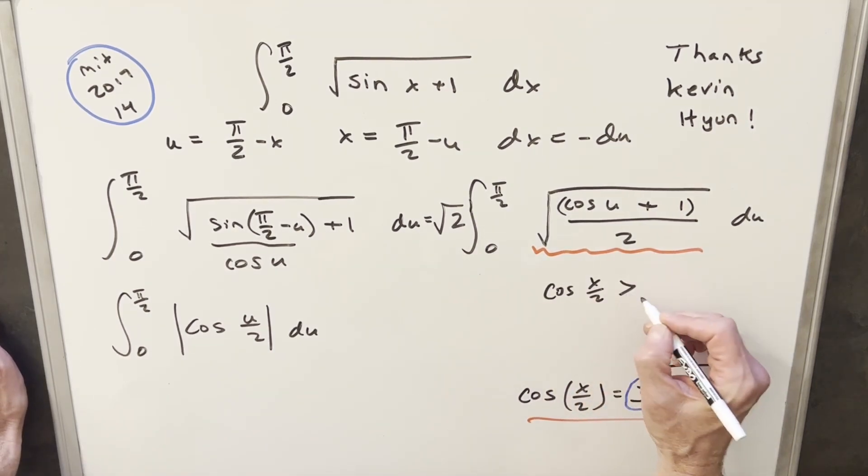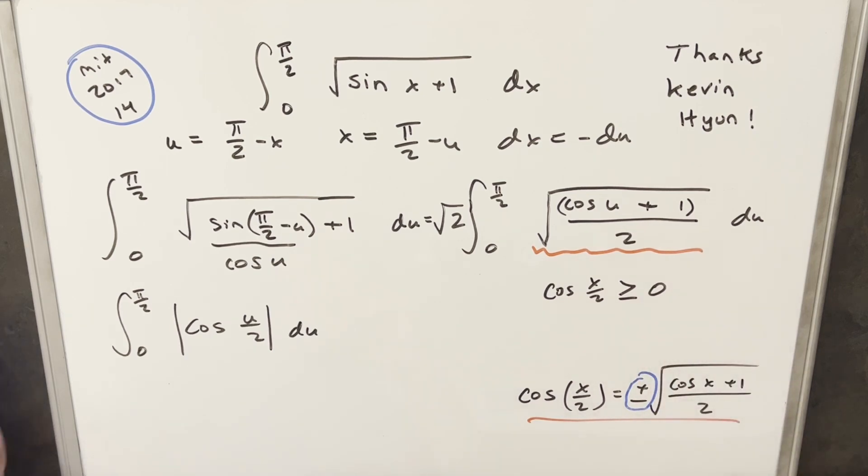let's just notice for this cosine of x over 2, we just want to know when's that going to be greater than or equal to 0. Well, of course, cosine's periodic, so it's going to be greater than 0 all over the place. So we just notice if x over 2 is between 0 and pi over 2, then cosine's positive, because that's just the first quadrant.